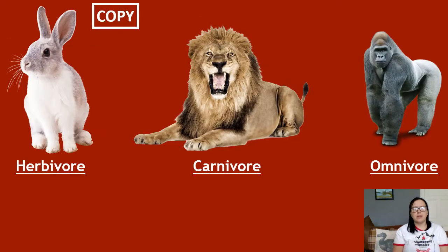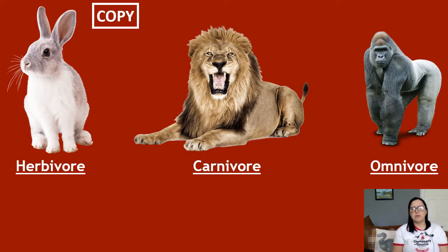Things that only eat plants are called herbivores. Things that only eat meat or other animals are called carnivores. Things that eat both plant and meat are known as omnivores — 'omni' meaning kind of 'all'.